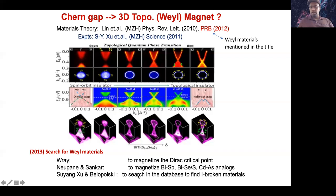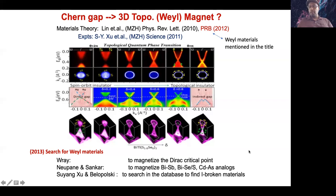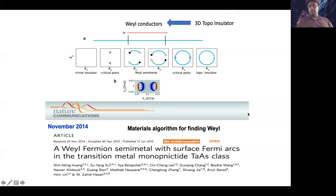I asked my postdocs So Young Xu and Ilya Belopolsky to search the database for inversion-broken materials as analogs of the Dirac critical point system. The approach: if you start with a 3D topological insulator and close the gap at two points to reach the Dirac critical point, then breaking symmetry means the Dirac can only break into Weyl — leading to Fermi arc construction. This is how our finding of Weyl fermions grew from our earlier work on 3D topological insulators.